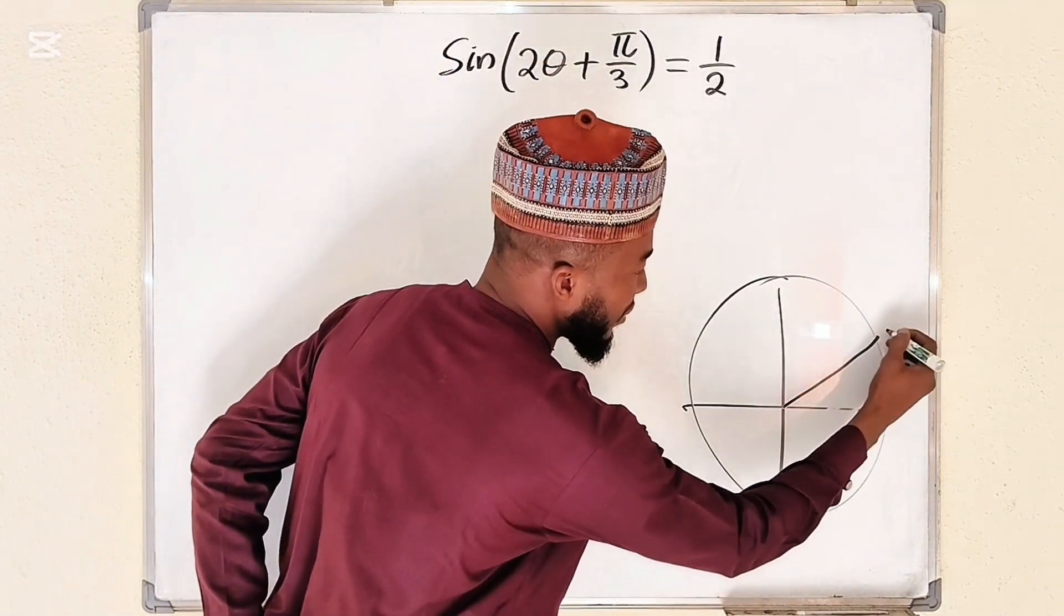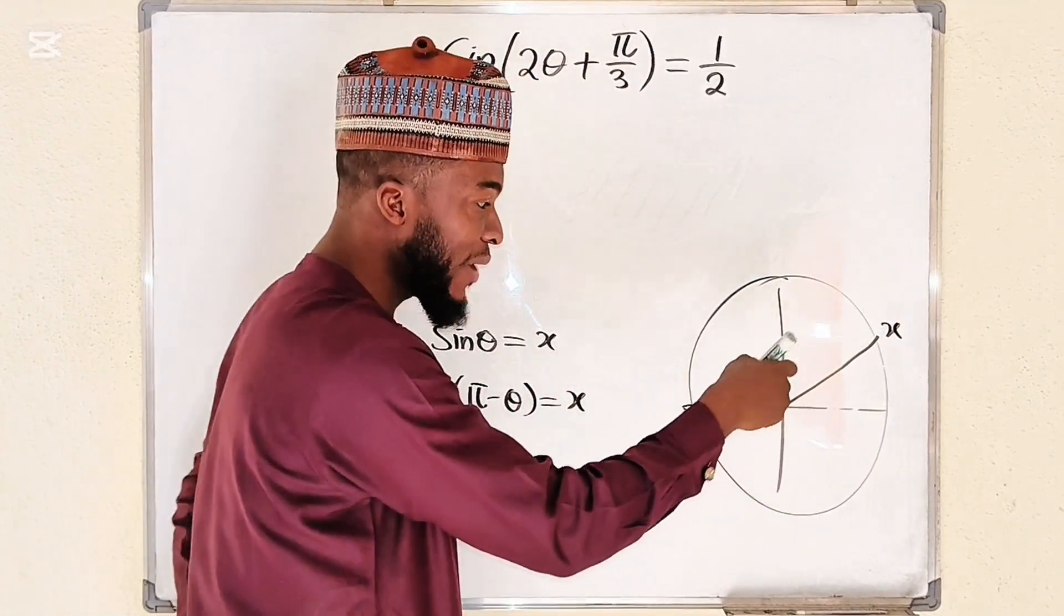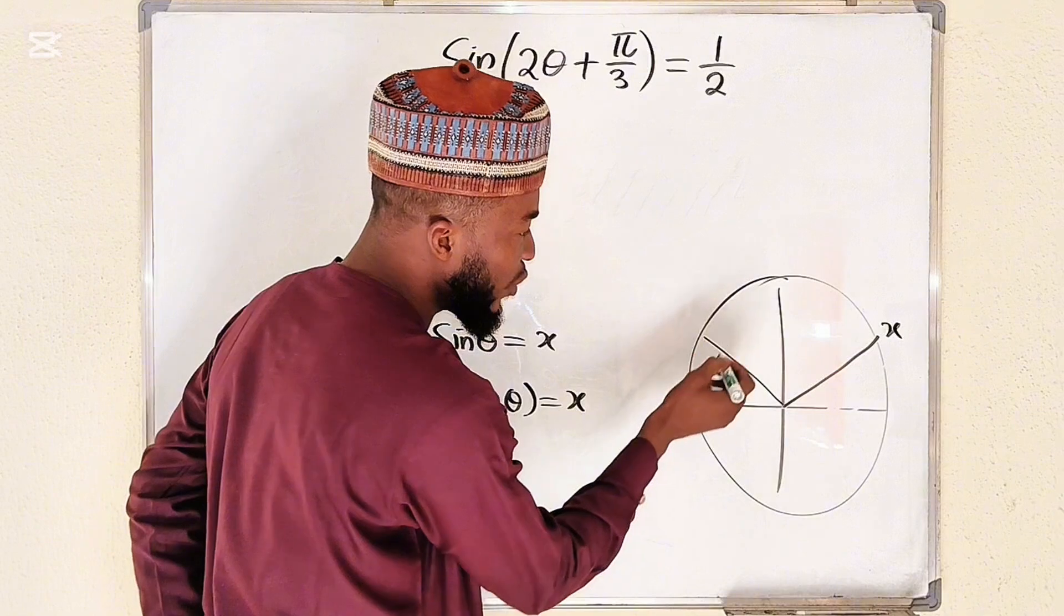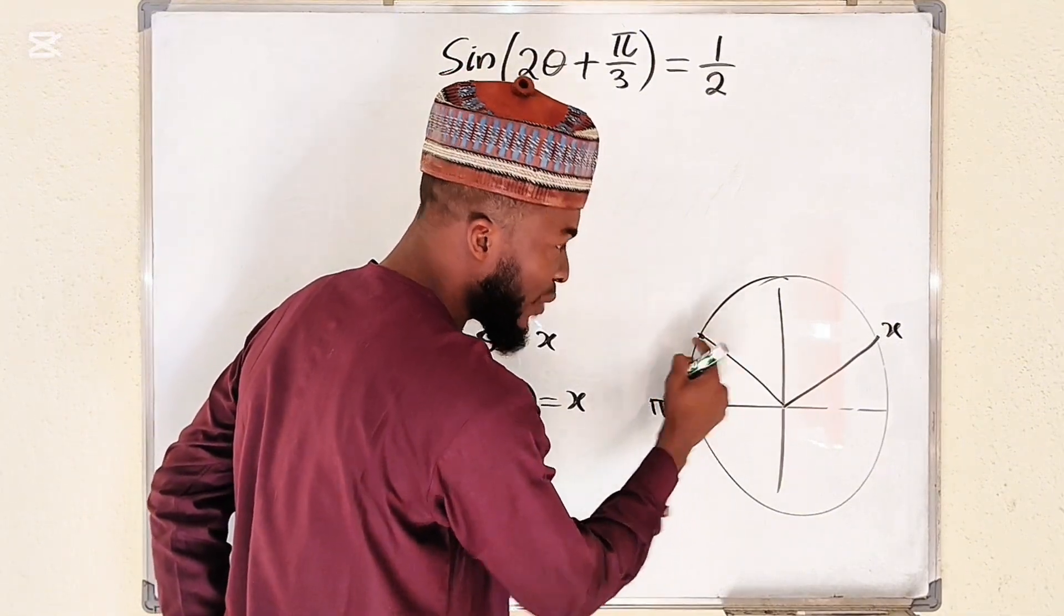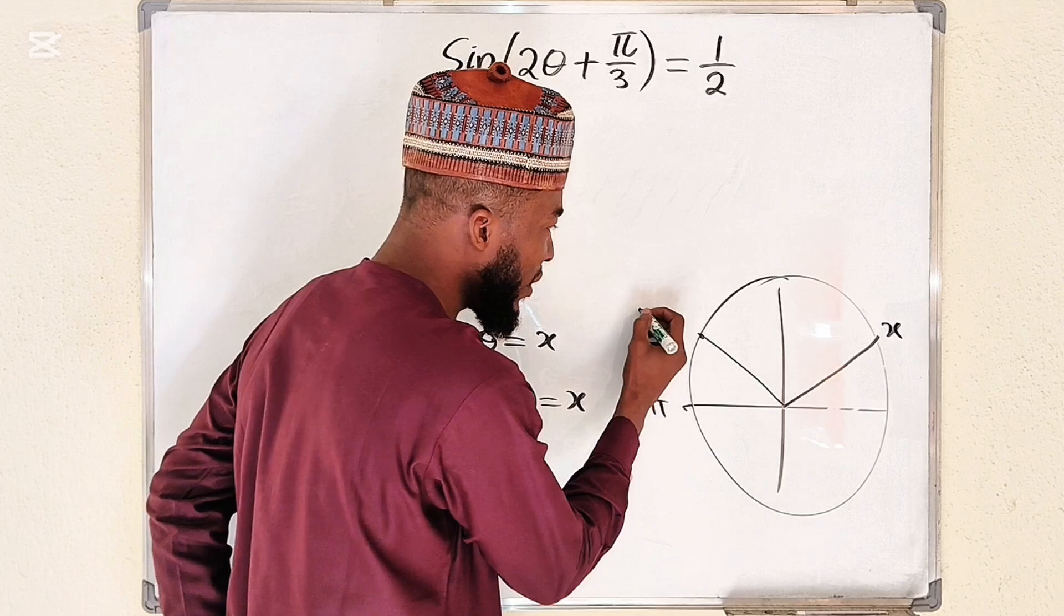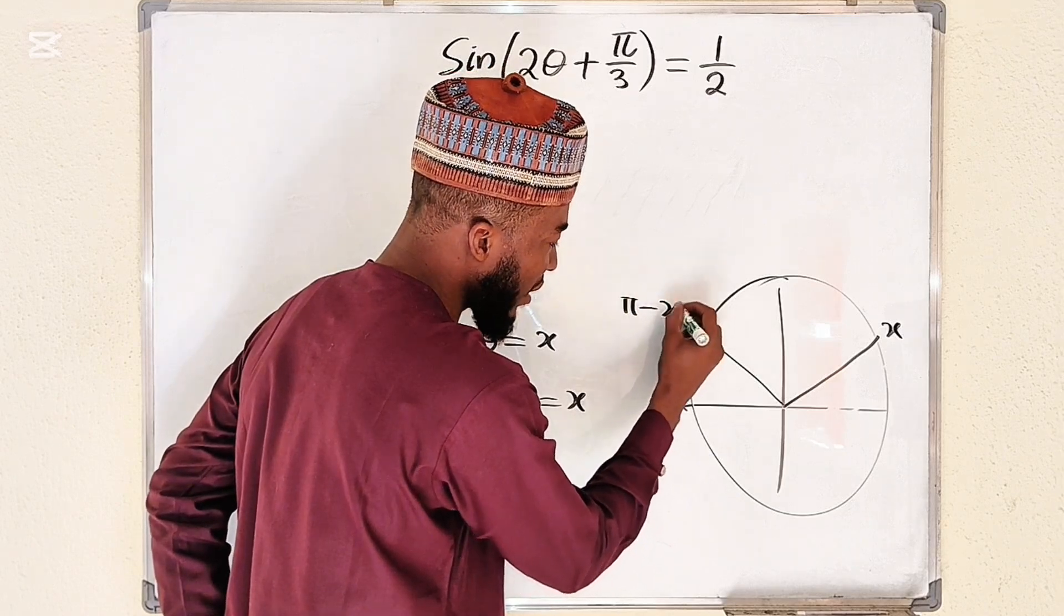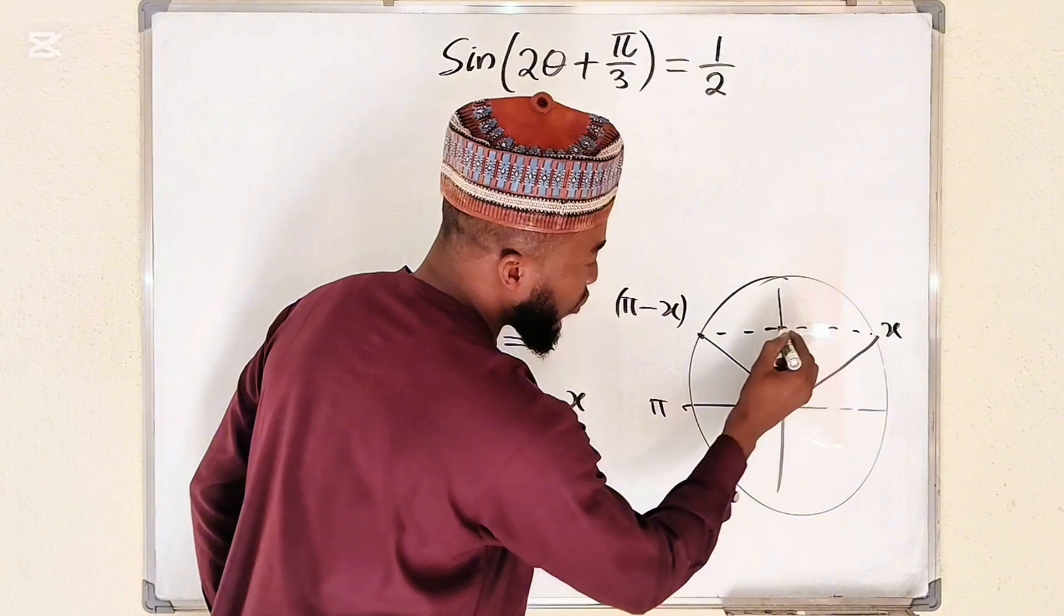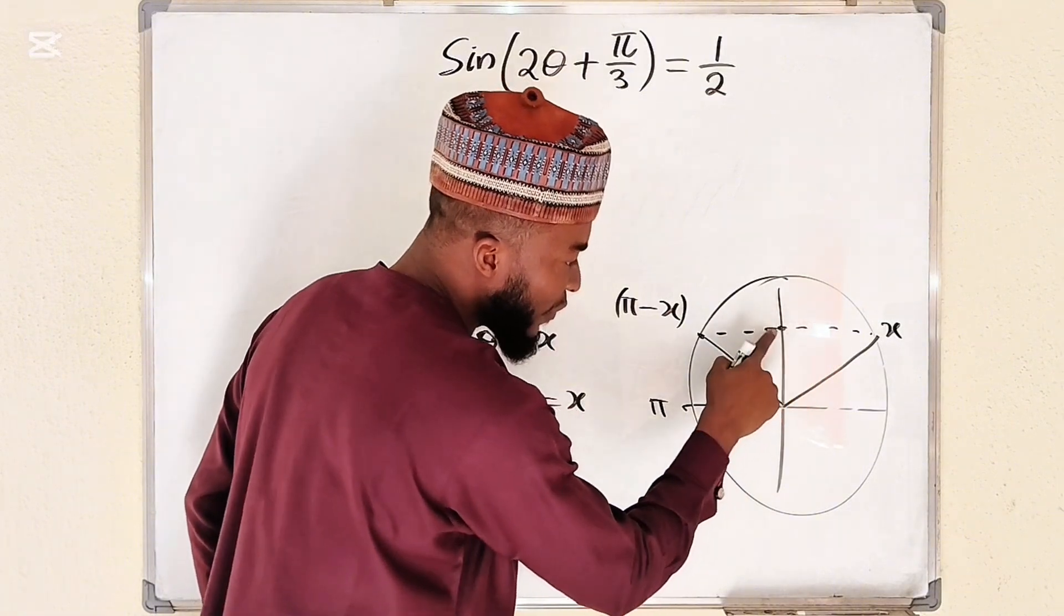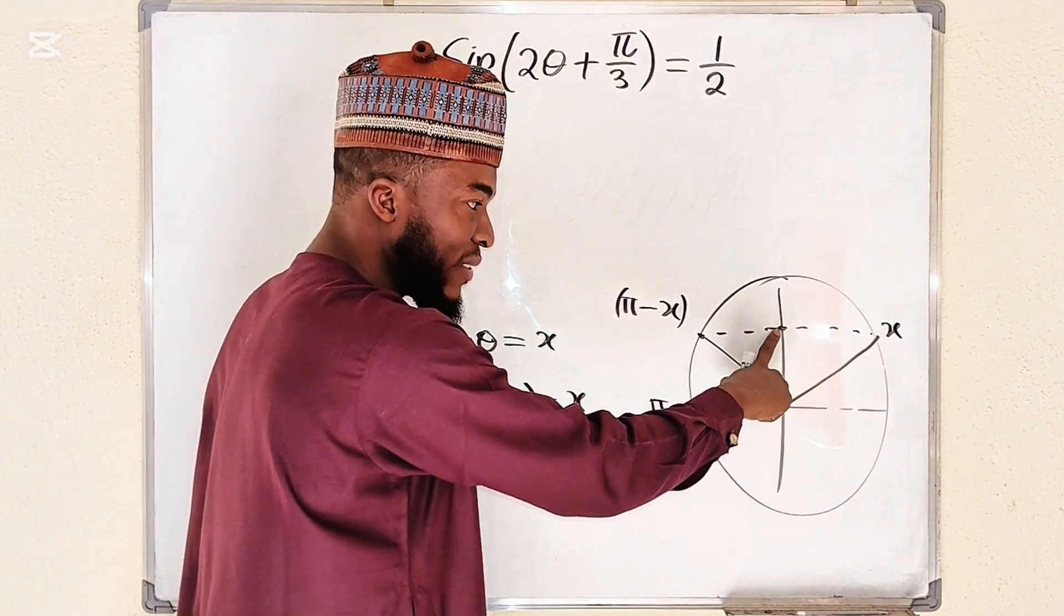Remember, if you have your unit circle, if you have x here for sine of x, this is pi. So this reflection in the second quadrant will be pi minus x, and because sine depends on y-axis, the value they share in common is this.